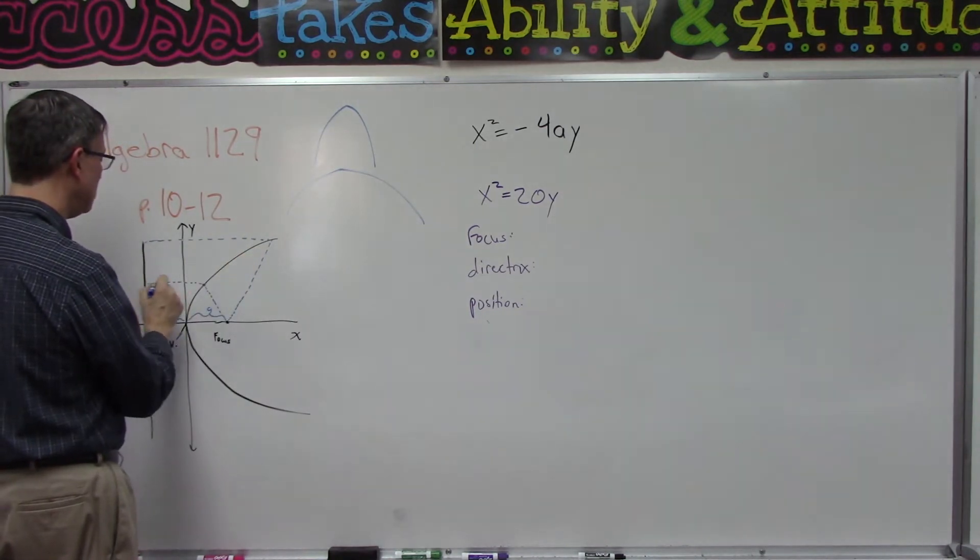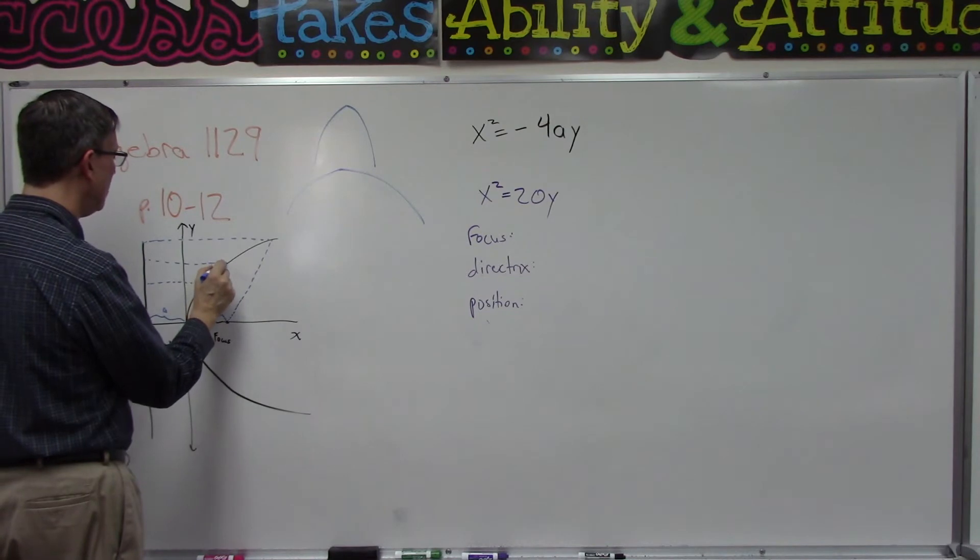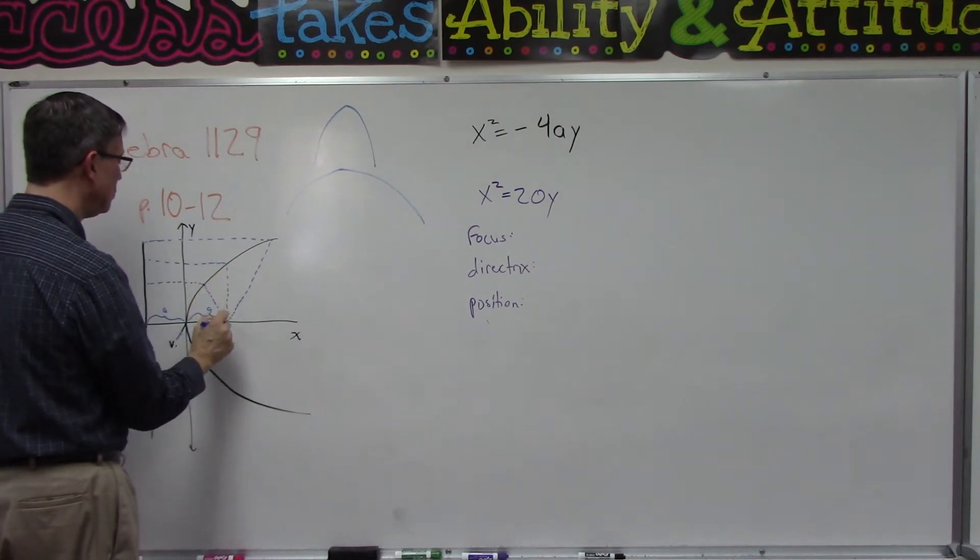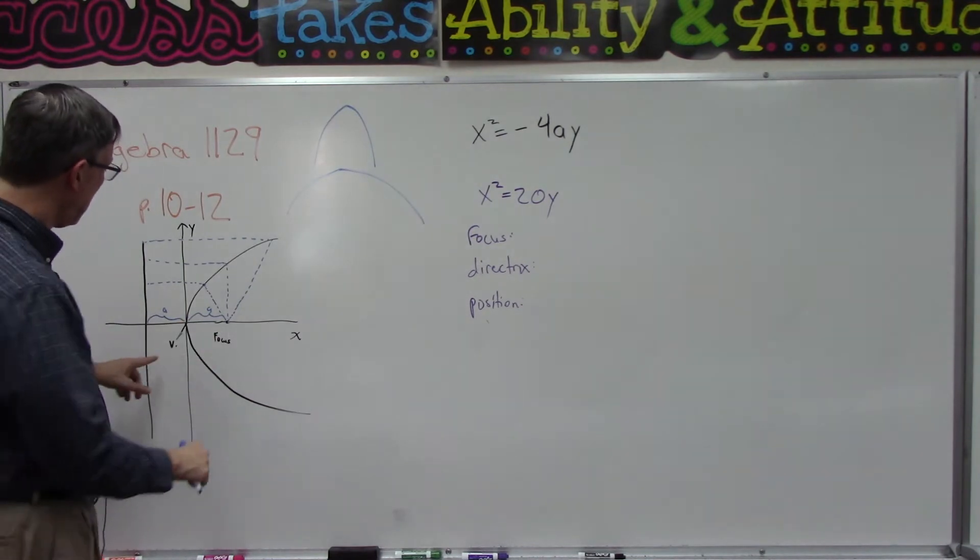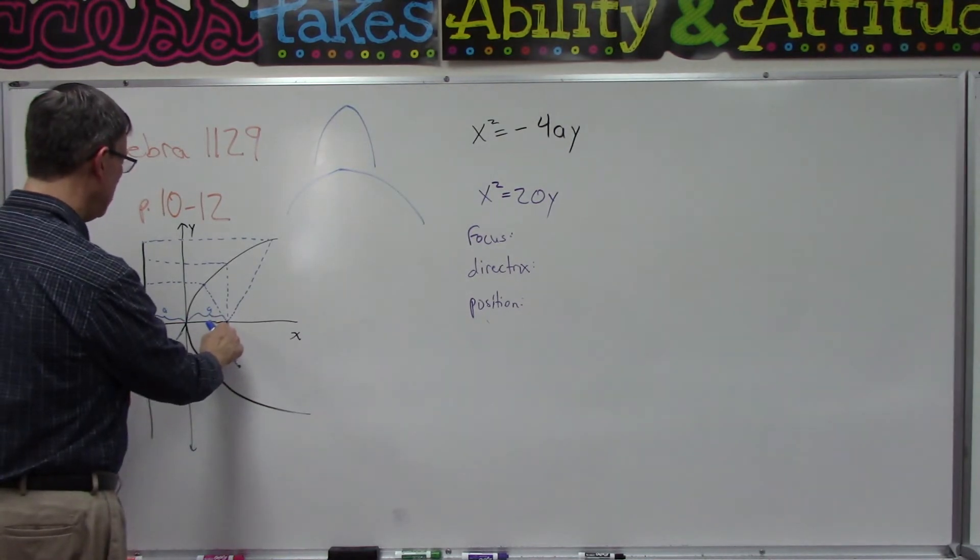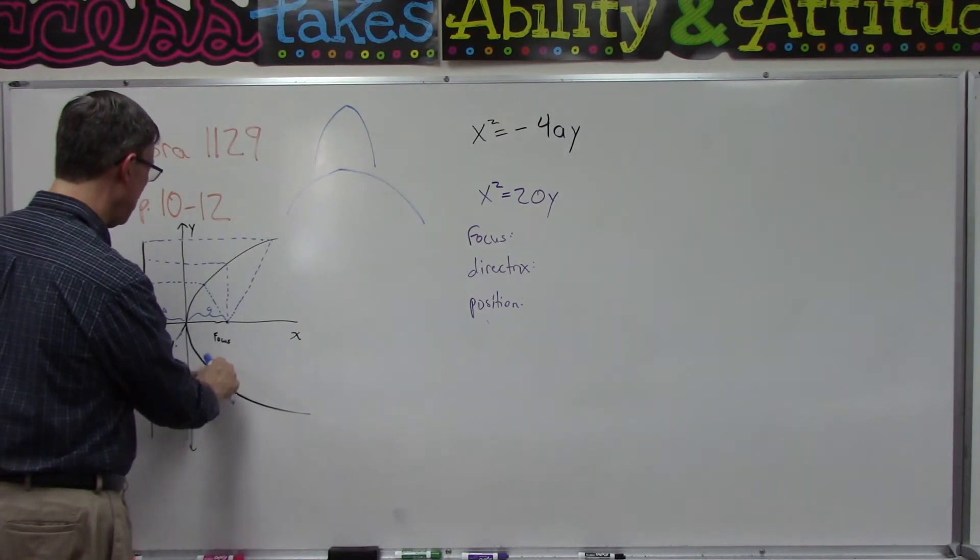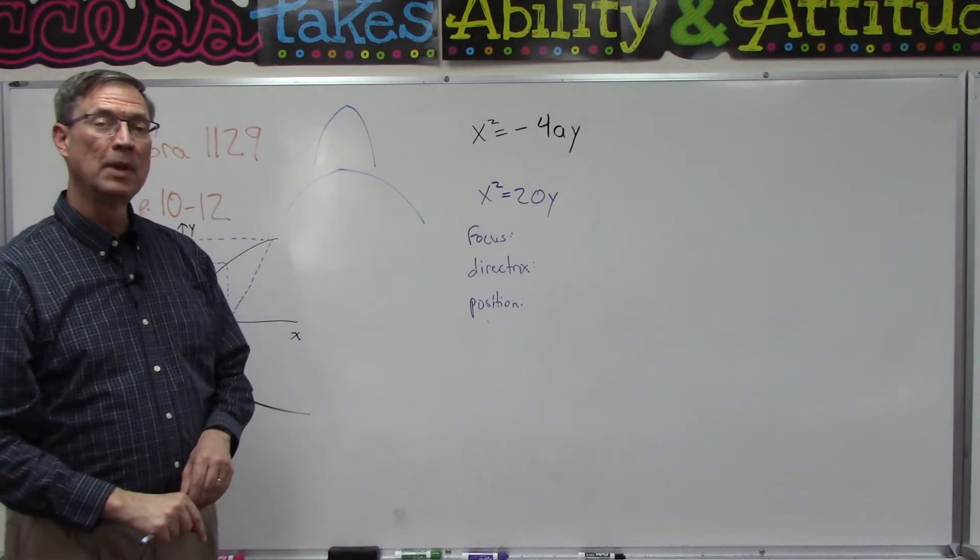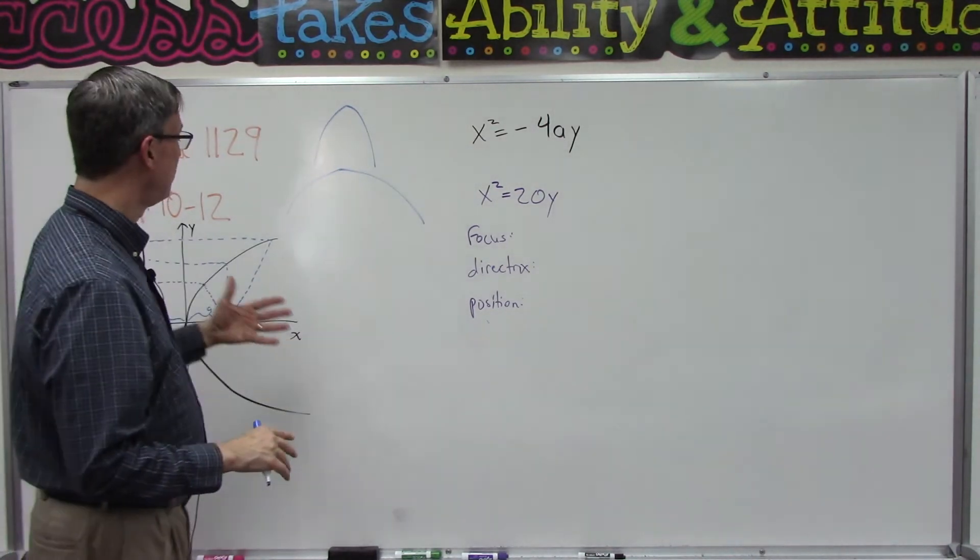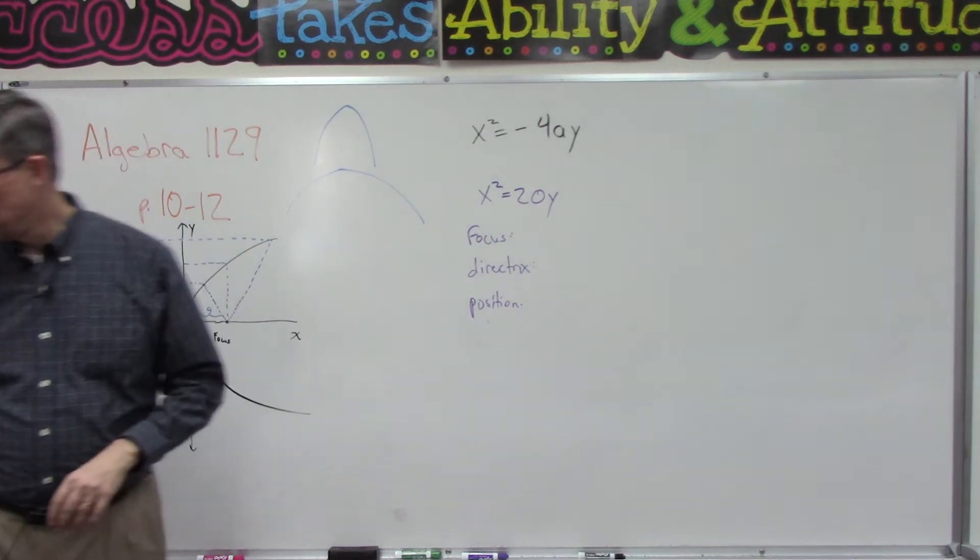The distance from here to here, at any point where it meets up here, that distance should be the same. It's not very accurate. The same thing would happen down here if I drew it from the focus to the graph and then from the directrix over to the graph - those two distances should be the same length. That is the definition of a parabola.